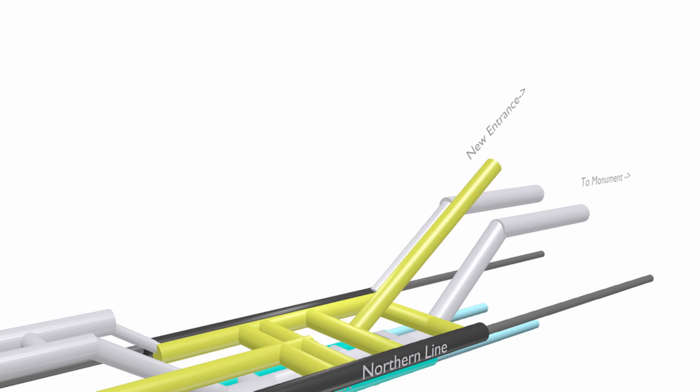It also means that for the first time ever, the northern line is going to be step-free at Bank as they can put in new lifts that go directly from that new concourse down to the northern line and then continue down to the DLR underneath, which means the interchange will also be much more convenient for passengers that need to use the lifts.